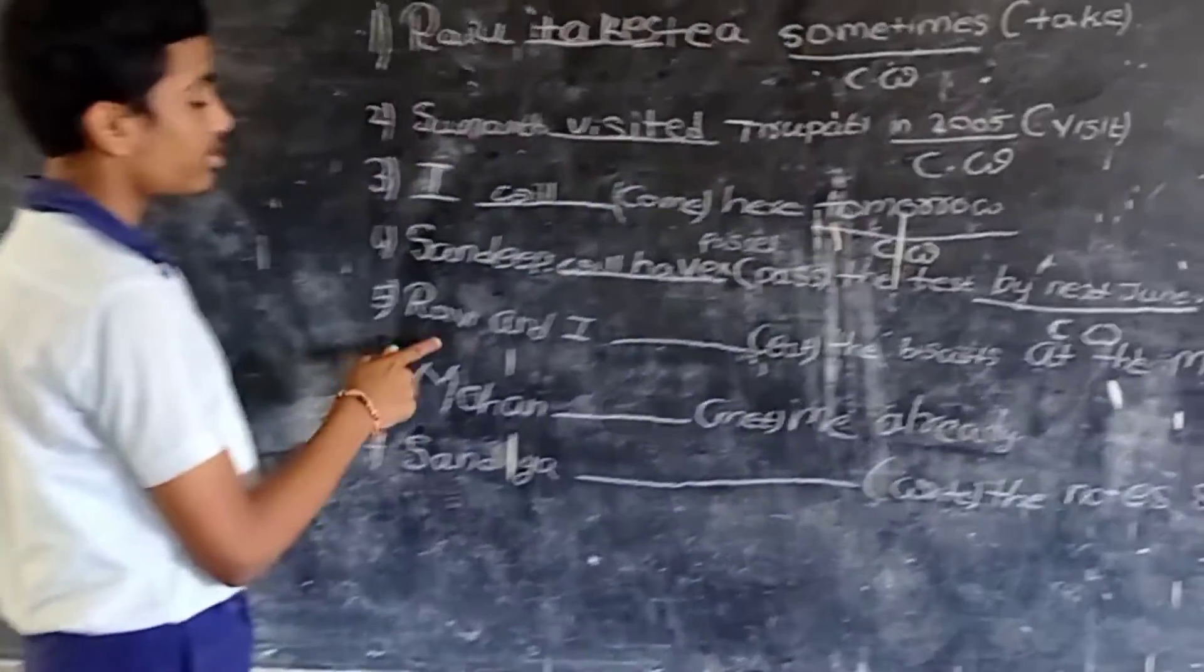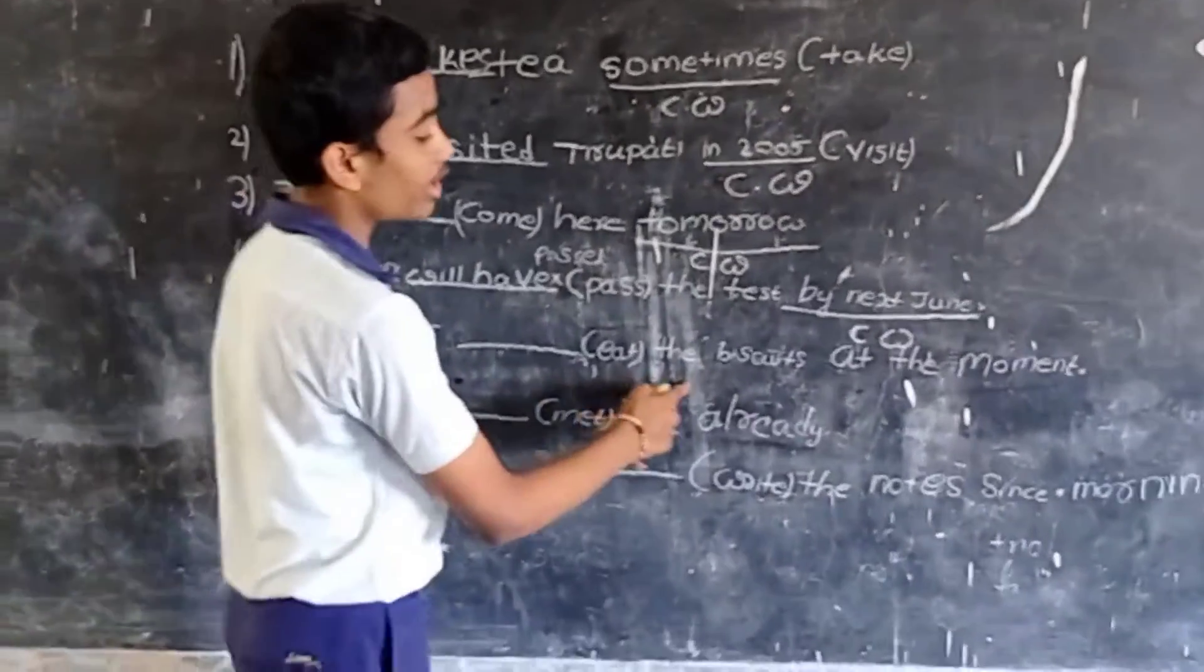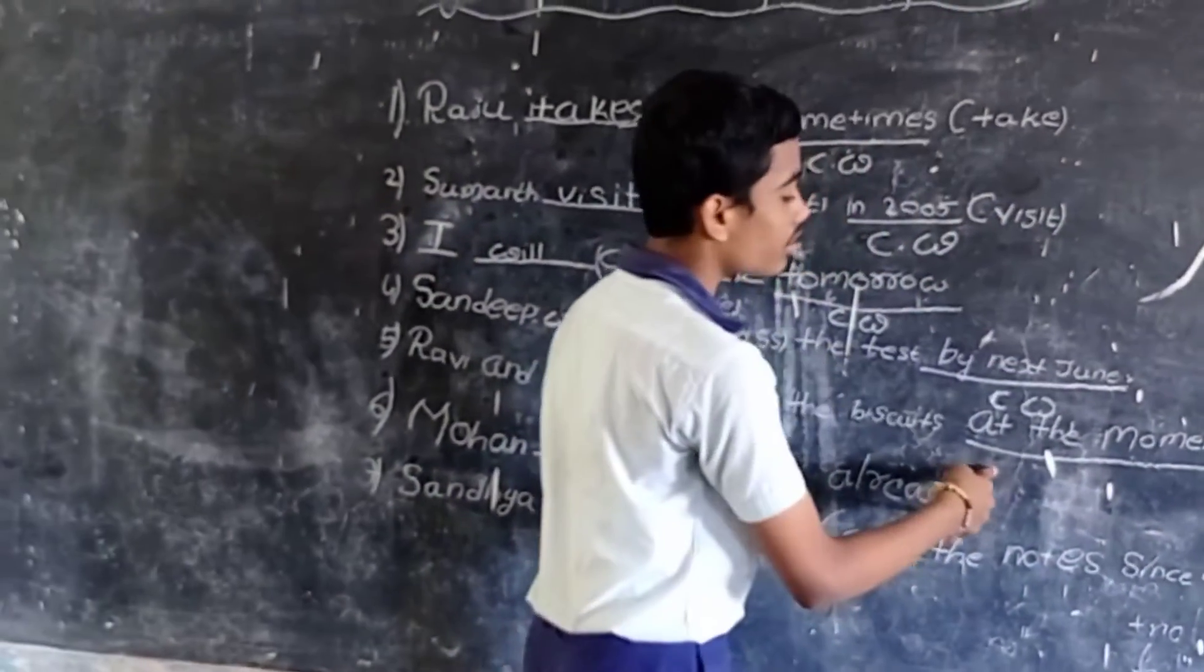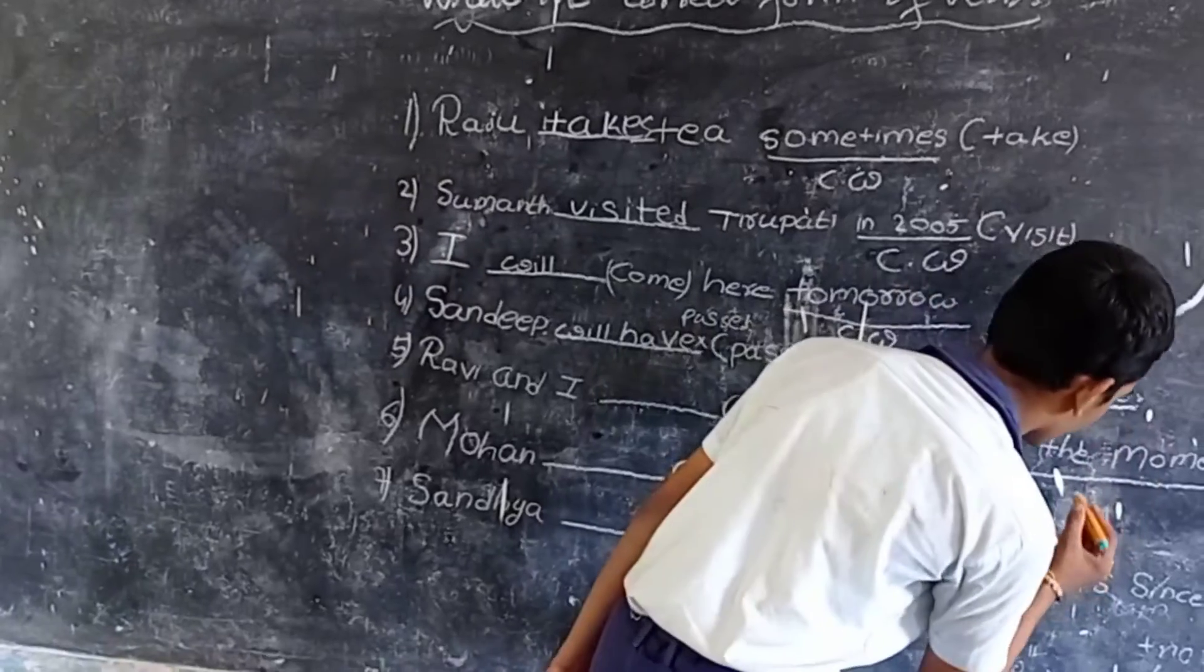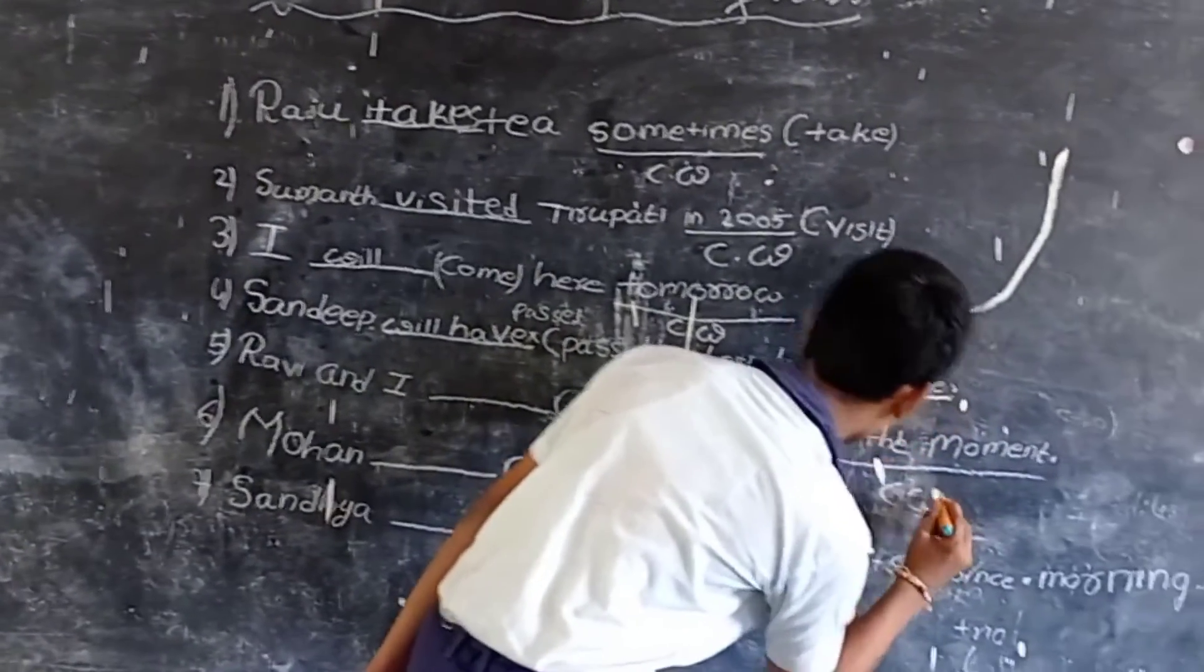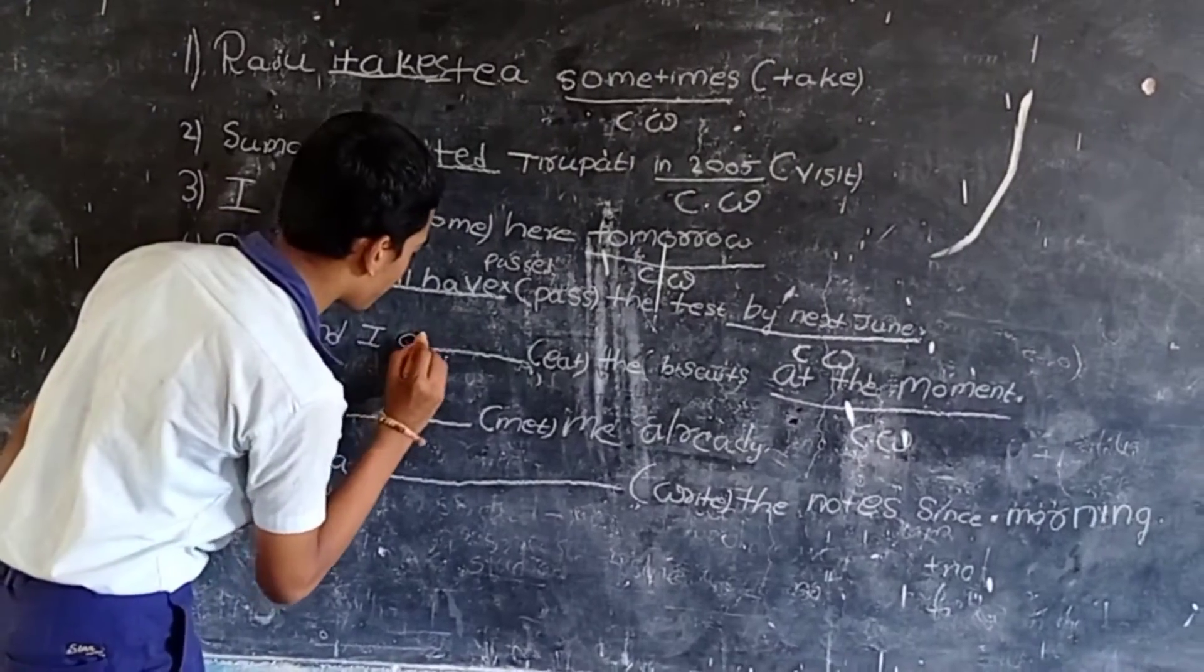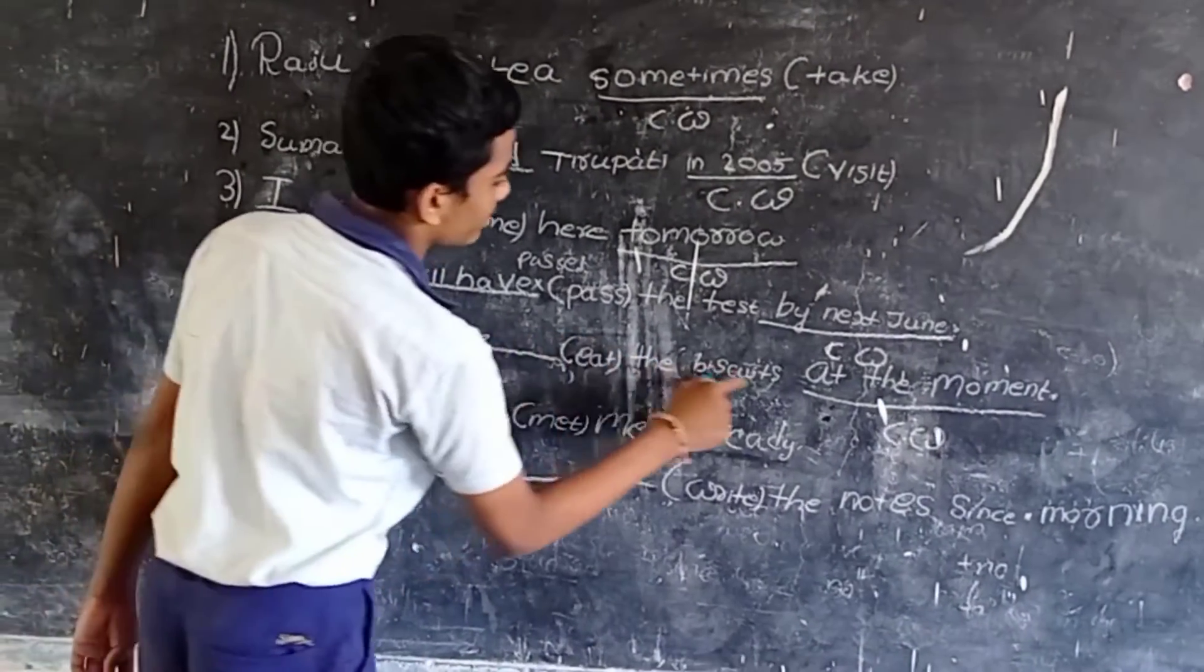The next example is: Ravi and I eat the biscuits at the moment. Here, the clue word is at the moment. It belongs to present continuous. So, the answer is, Ravi and I are eating biscuits at the moment.